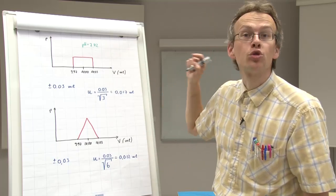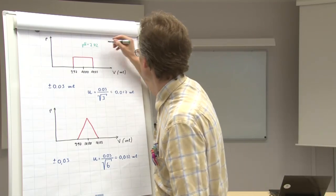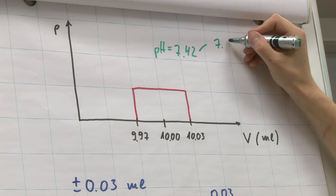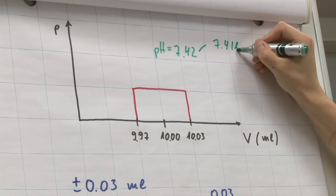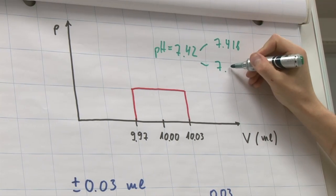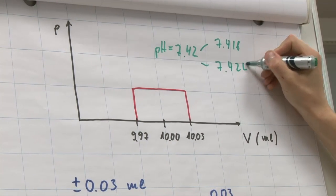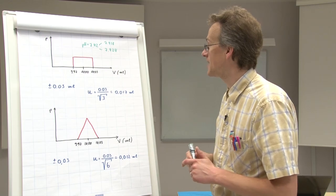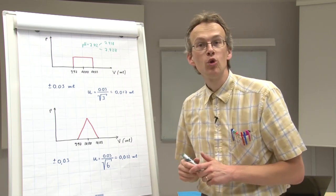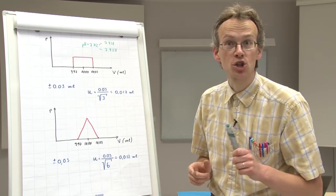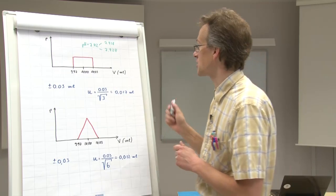So the true reading can be, for example, 7.418. It can also be 7.424. And it can also be different other values. But if we now look carefully, it's obvious that this reading certainly will be within the range of...